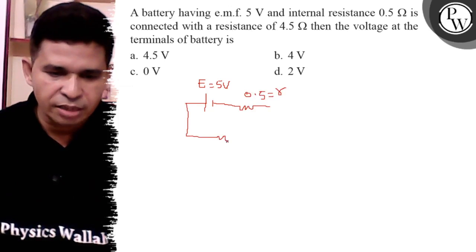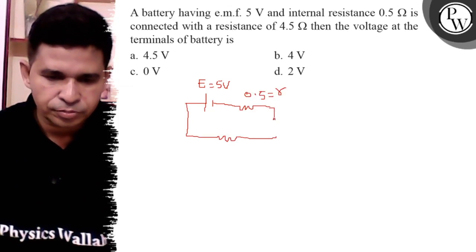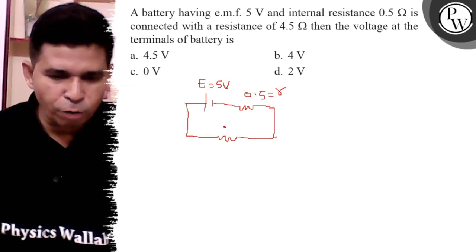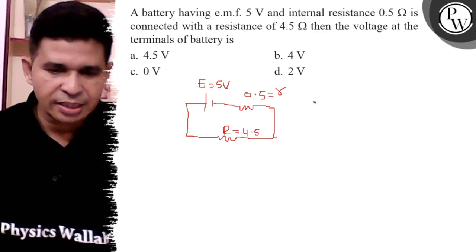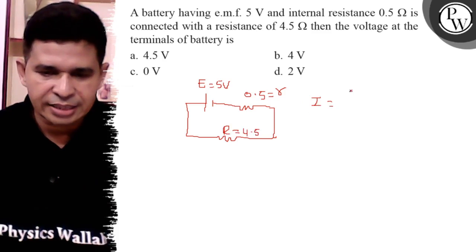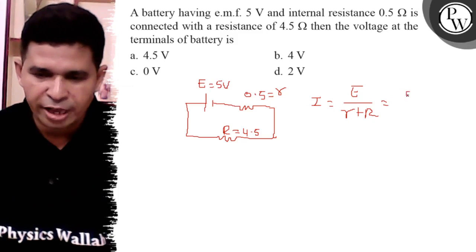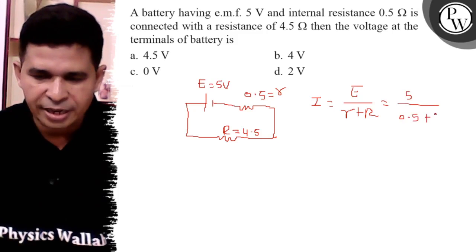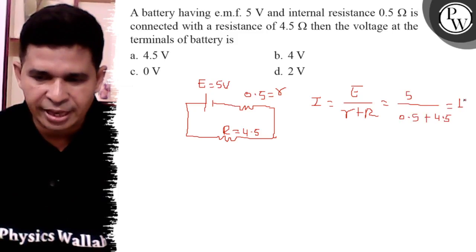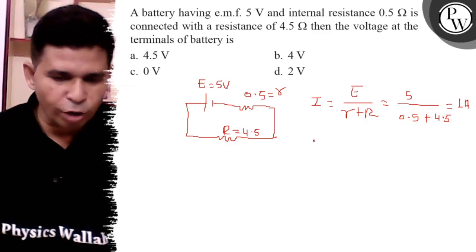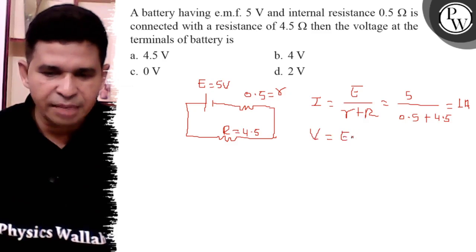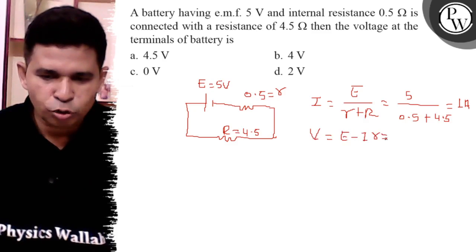Capital R is given as 4.5 ohm. So current I equals E divided by (R plus r), which is 5 divided by (0.5 plus 4.5), so current I is 1 ampere. Now the terminal potential difference (TPD) is E minus I times r.